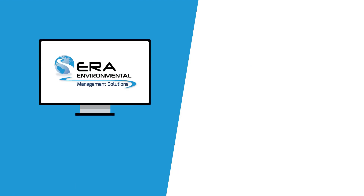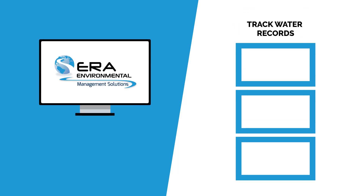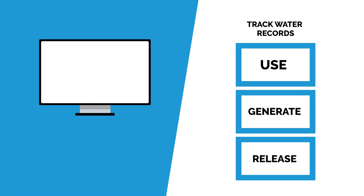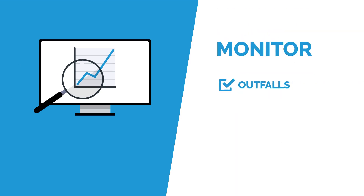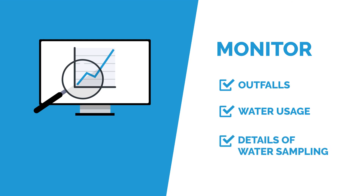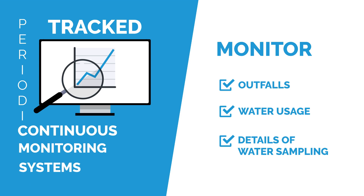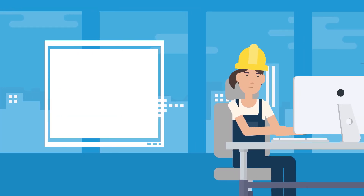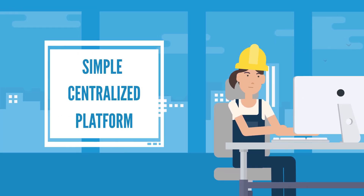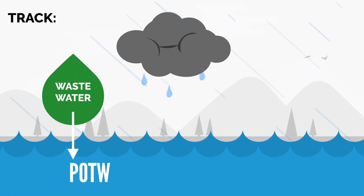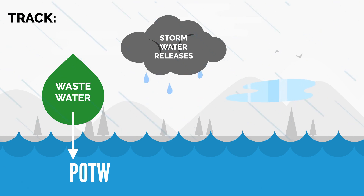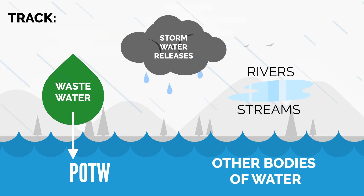The ERA software provides tools to track your water records and determine how much water you use, generate, and release. You can view all your water and wastewater metrics at a glance to monitor outfalls, water usage, and details of water sampling that are tracked through periodic or continuous monitoring systems. Through one simple and centralized platform, Julia can track all the wastewater discharged to POTW, as well as monitoring all stormwater releases to rivers, streams, and other bodies of water.